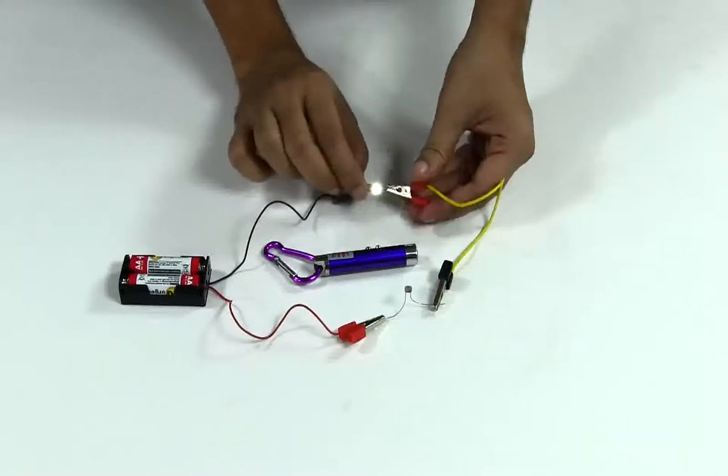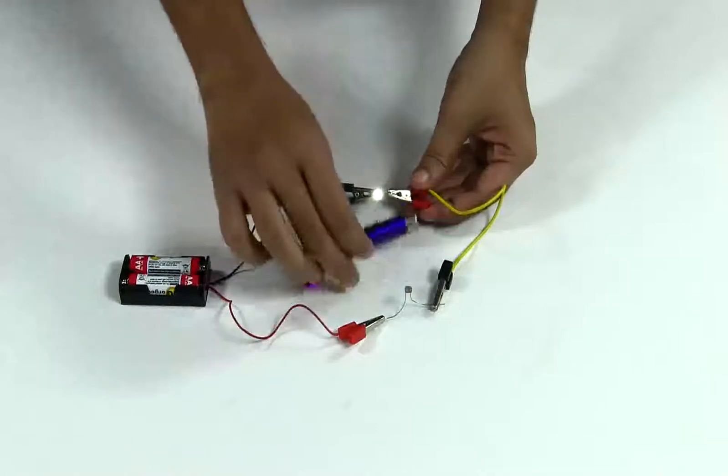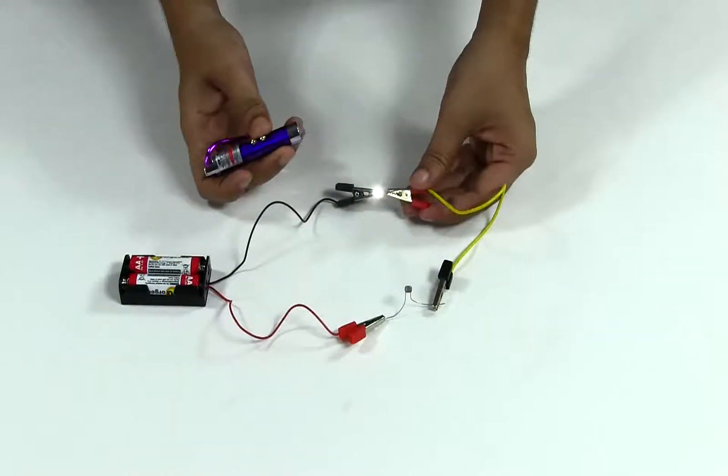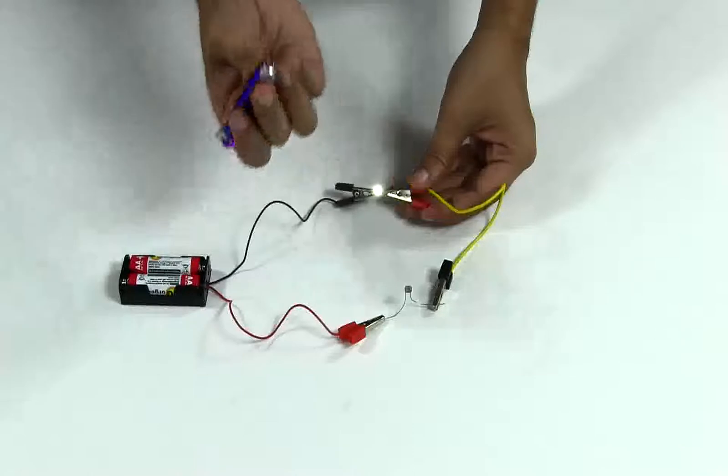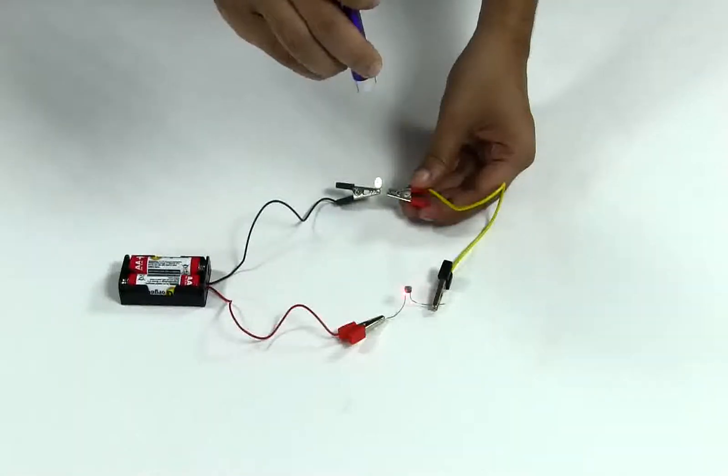We can see that the LED has lighted up, but it's pretty dim. Now I'm going to increase the intensity of this light by using another light. If I shine this laser light on the LDR, our LED brightens up, and if I remove the laser light, the LED dims a bit.